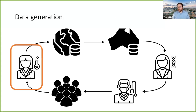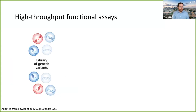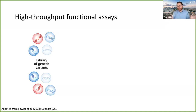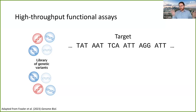Let's start with some background on how we generate the data. If we want to assay a bunch of genetic variants, we need to start with a library of DNA molecules encoding those variants. For a deep mutational scan, we generate a library encoding all possible single nucleotide changes or all possible single amino acid changes in a gene of interest, then transform them into cells. They all have in common that we start with a target sequence—I've split it into codons because it's a coding sequence that gets translated into amino acids.